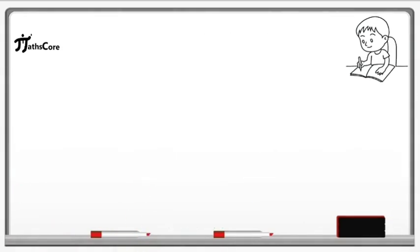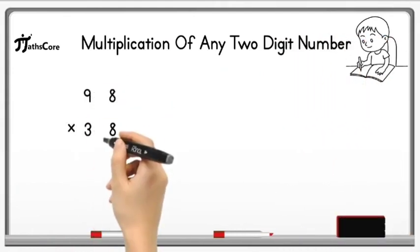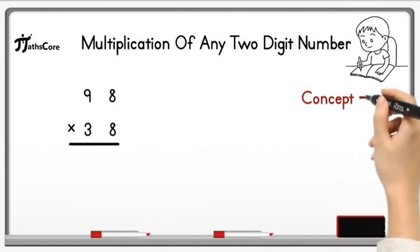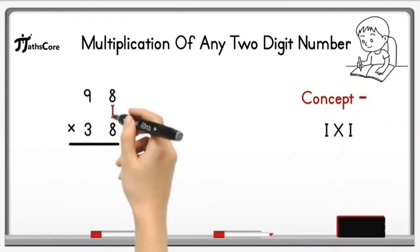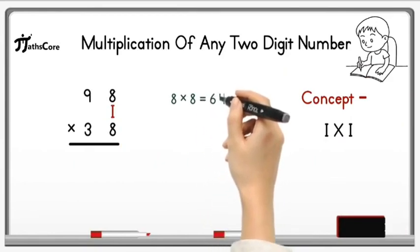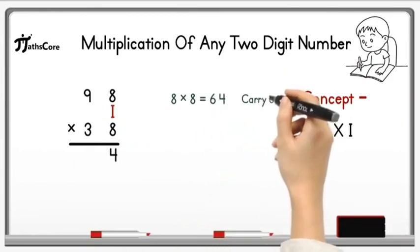Let's solve one more example on multiplication of any 2 digit number. Example is 98 × 38. Here we need to use concept of 1×1. So first of all, multiply unit place digit together. 8 × 8 is equal to 64, which is a 2 digit number. So write down 4 here and take 6 as a carry.